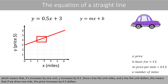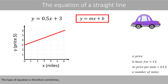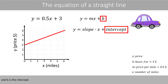M represents the slope or the gradient of the line, which means that if X increases by one unit, Y increases by 0.5. Since X has the unit miles and Y has the unit dollars, this means that if we drive one mile, the price increases by 0.5 dollars. Likewise, if X increases by 4 units, Y increases by 2. In our example, this means that if we drive 4 miles, the price increases by 2 dollars. This type of equation is therefore sometimes expressed as Y = MX + B, where M is the slope and B is the intercept.